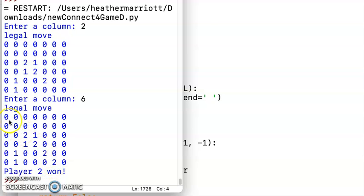So now all I need to do is work on the horizontal wins and the vertical wins. And then we'll be done with a Connect Four.